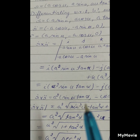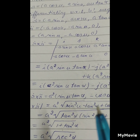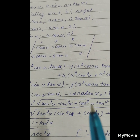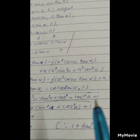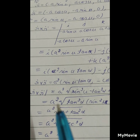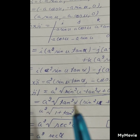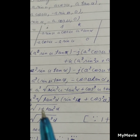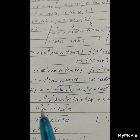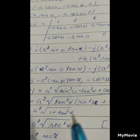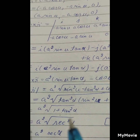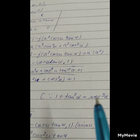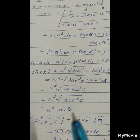The modulus |ṙ × r̈| = a²·√(sin²(u)·tan²(α) + cos²(u)·tan²(α) + 1) = a²·√(tan²(α)(sin²(u) + cos²(u)) + 1) = a²·√(1 + tan²(α)). Since 1 + tan²(α) = sec²(α), this equals a²·sec(α).